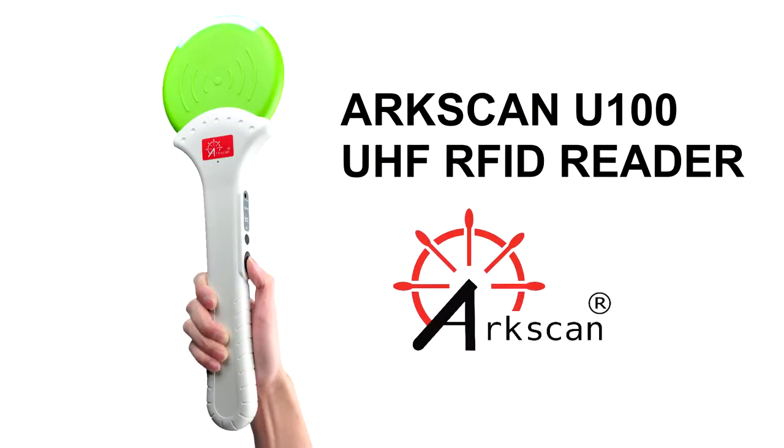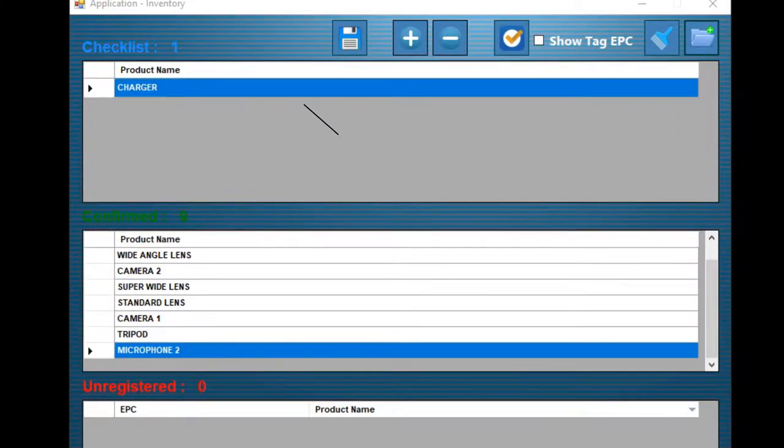With the ArcScan U100 RFID reader, you are able to find out which items are accounted for and which items are missing, all within a few seconds.